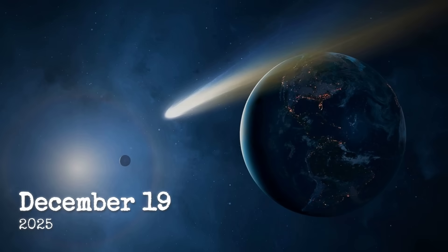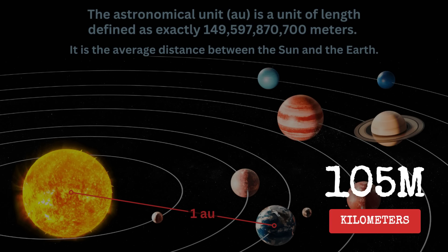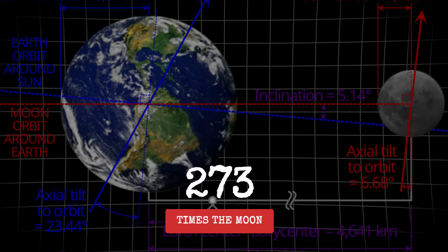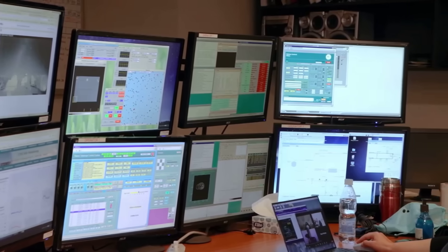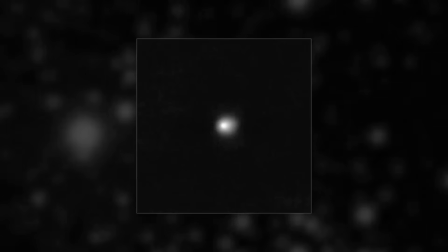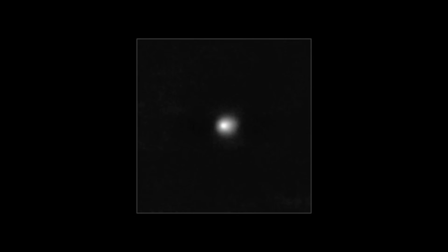The closest approach to Earth actually occurs on December 19th, when it will pass at approximately 0.7 astronomical units, about 105 million kilometers away. That's still quite distant, about 273 times farther than the moon, so there's absolutely no danger. But it will be the best opportunity for detailed observations from Earth-based telescopes.